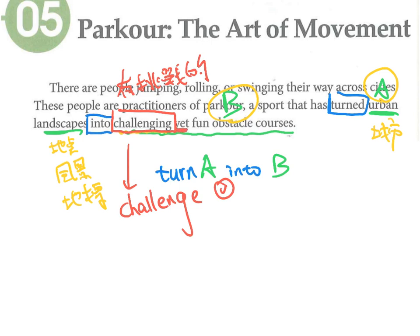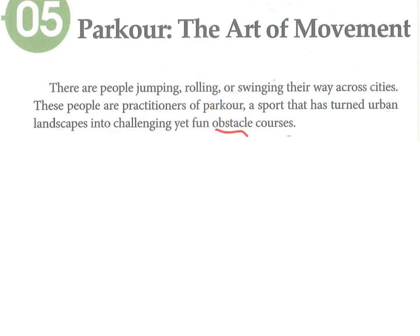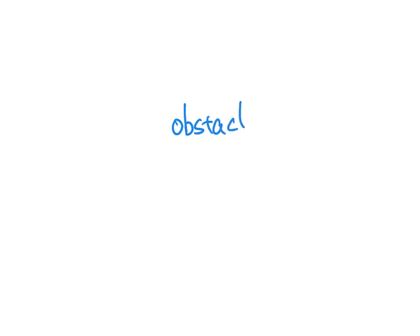城市的风景转变成什么呢？转变成challenging，原型是challenge，挑战，challenging就是有挑战的。然后是obstacle，这个字就是有障碍的意思。obstacle这个单字仔细看，你会看到有个sta在这里，ob是反向。